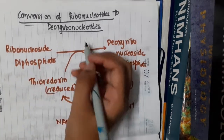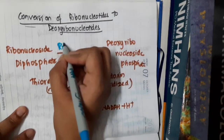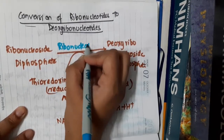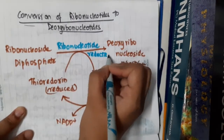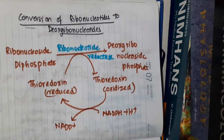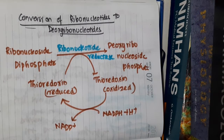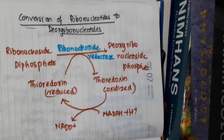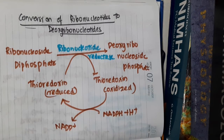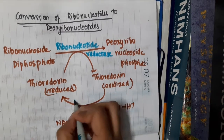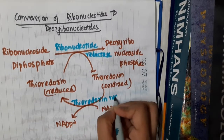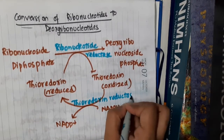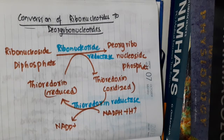To summarize the enzymes involved: ribonucleoside diphosphate, in the presence of ribonucleotide reductase, is converted to deoxyribonucleoside diphosphate. Thioredoxin in its reduced form is converted to oxidized thioredoxin. This oxidized thioredoxin, in the presence of thioredoxin reductase, is converted back to reduced thioredoxin.